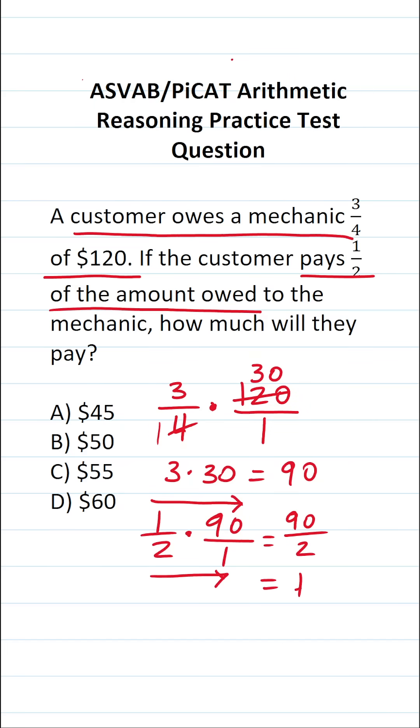Again, if you didn't know that 90 divided by 2 was 45, you could read this as 90 divided by 2 and do the long division accordingly. 2 goes into 9 four times without going over. 2 times 4 is 8. 9 minus 8 is 1. Drop down to 0. 2 times 5 is exactly 10. So we have no remainder. So you can see that in doing that long division, I do get the answer of $45. The customer will pay $45.